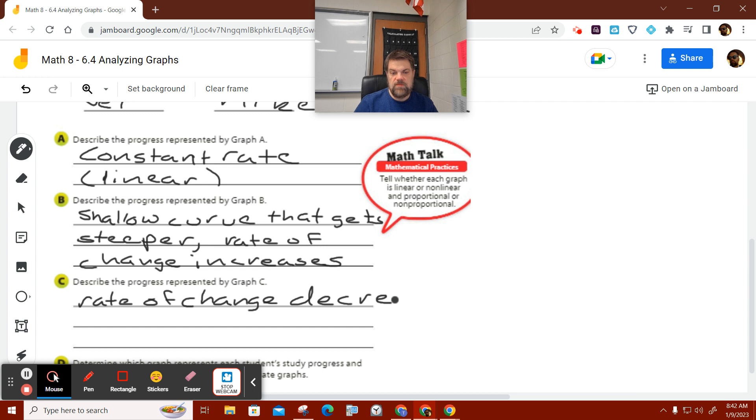I'm talking about graph C. My bad. So, in other words, for B, if I look at graph B, it curves up. Well, the rate of change increases.